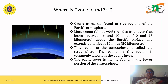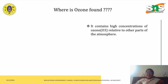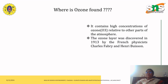This is how it is available as I have shown in the GIF. The ozone layer is a highly concentrated region of ozone relative to other parts of the atmosphere. This was discovered in 1913 by the French physicists Charles Fabry and Henri Buisson.